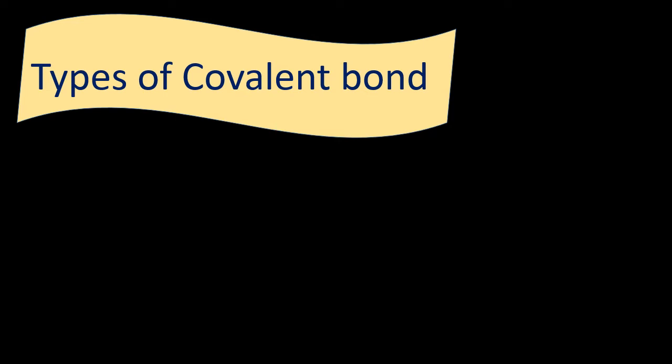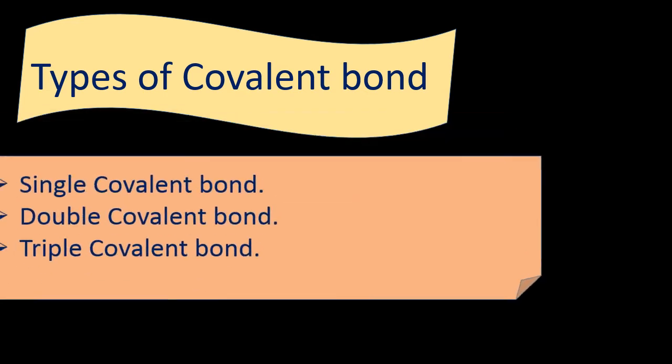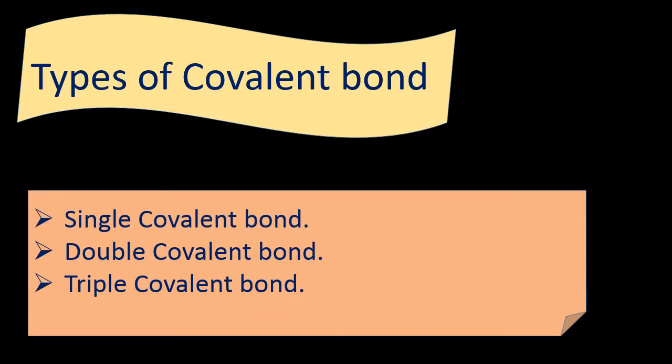Types of covalent bonds: the minimum number of pairs of electrons shared between atoms is one, but it can be more than one. There are single covalent bonds, double covalent bonds, and triple covalent bonds. In a single covalent bond, one pair of electrons is shared. In a double covalent bond, two pairs of electrons are shared.